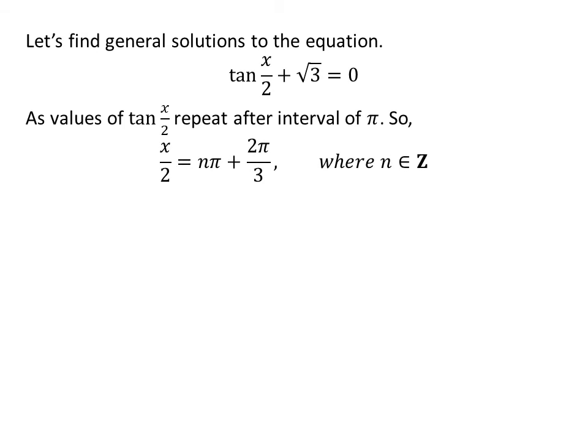Let us find the general solution. As we know, the values of tangent of x upon 2 repeat after the interval of pi. So, the general solution is x upon 2 is equal to n times pi plus 2 times pi upon 3 where n is an integer.